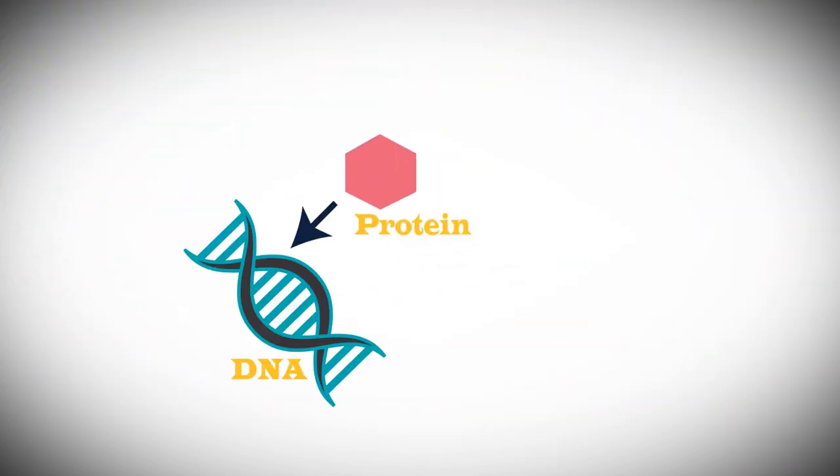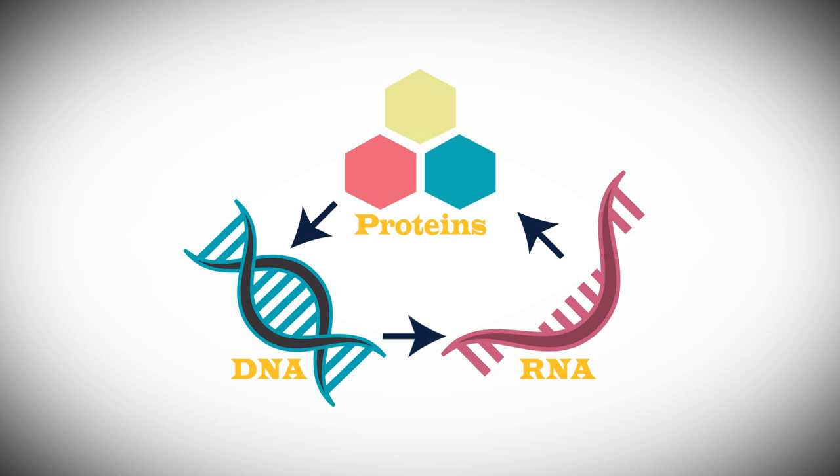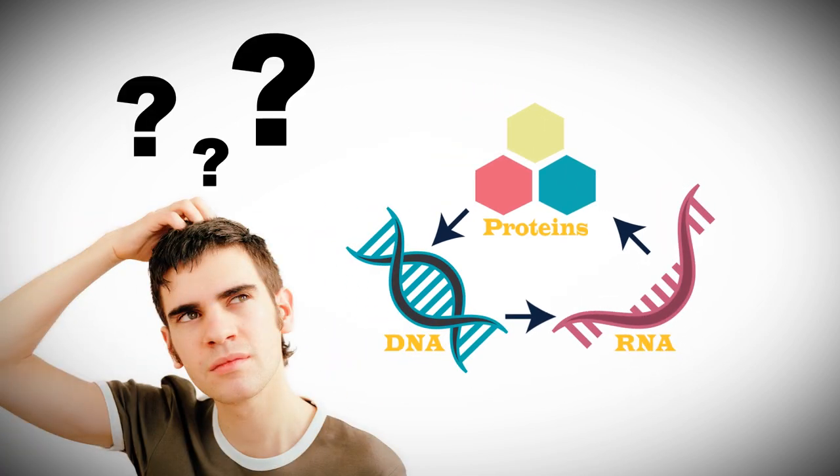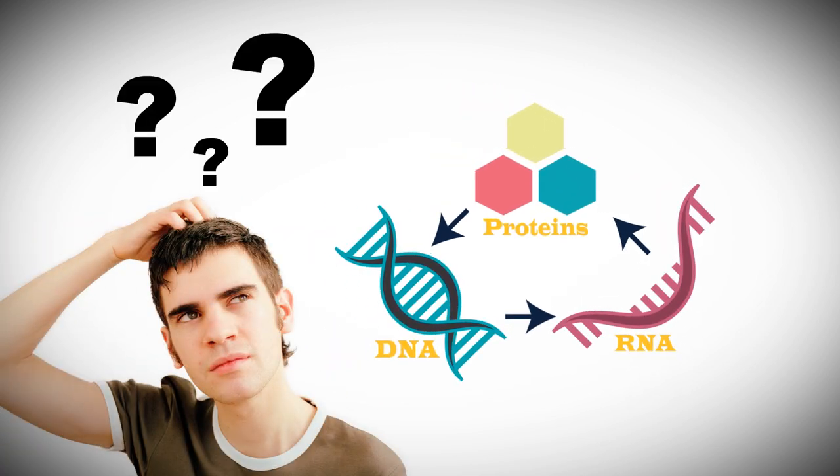So it takes a protein, along with DNA and RNA, to make a protein. Could random evolutionary events explain the origin of this three-way interdependent process?